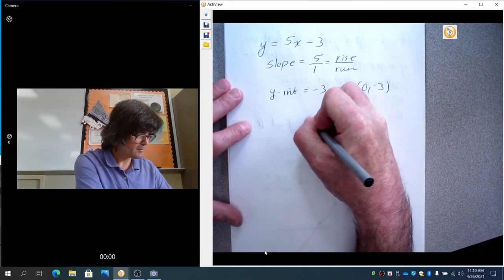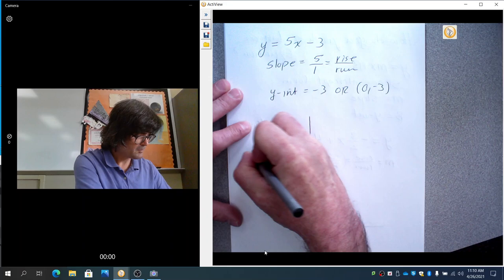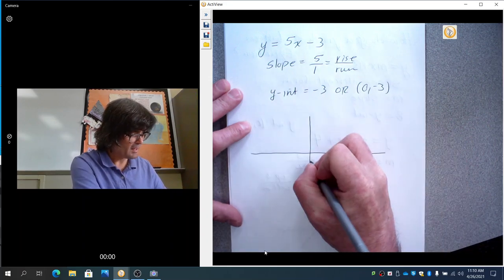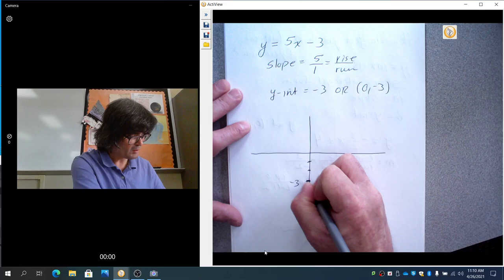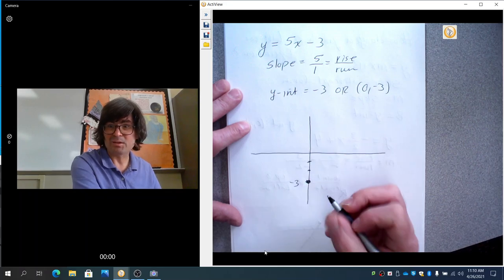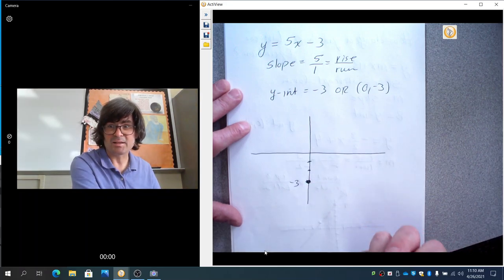Let's draw this. So, we'll start at negative 3. That is my y-intercept. You always want to start at a point and then use your slope to get another point.